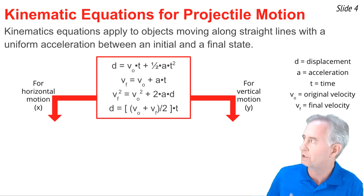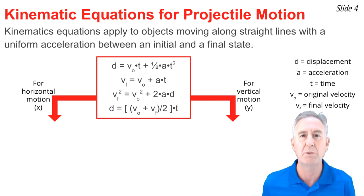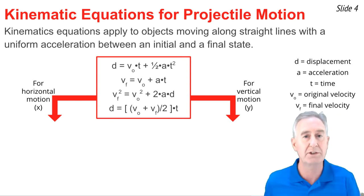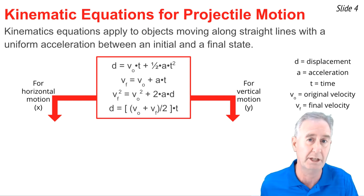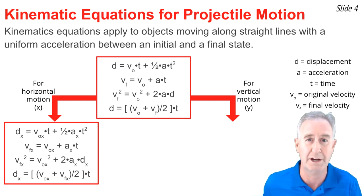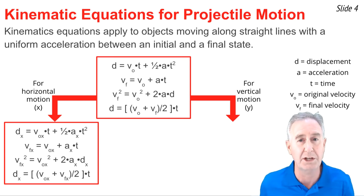To form the x equations out of these kinematic equations, we simply put a subscript x after every vector quantity in these equations. So instead of D, it's dx, meaning the displacement in the x direction. Instead of A, it's Ax, as in acceleration in the x direction. We end up with these four kinematic equations.